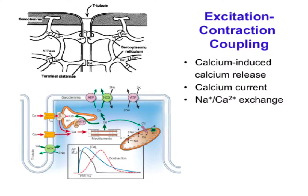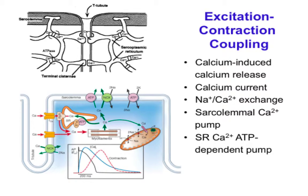The calcium coming in stimulates opening of the ryanodine receptor, resulting in further calcium release. Together, calcium from outside the cell and from the sarcoplasmic reticulum diffuse to the myofilaments to activate contraction. The SERCA pump then resequesters the calcium to enable relaxation. The sodium-calcium exchanger and ATP-dependent calcium pump remove calcium that entered through the calcium channel. About three-quarters of the activating calcium came from the SR and one quarter through the calcium current.